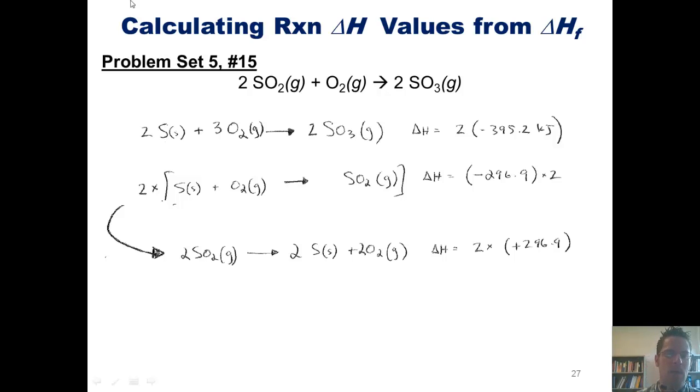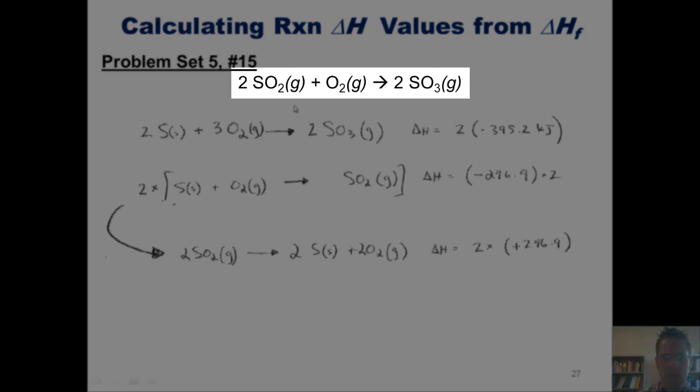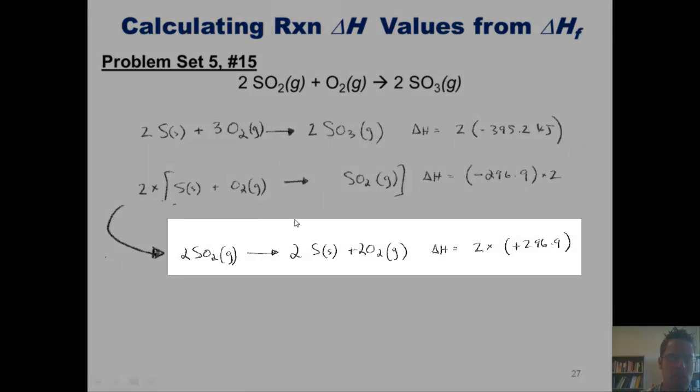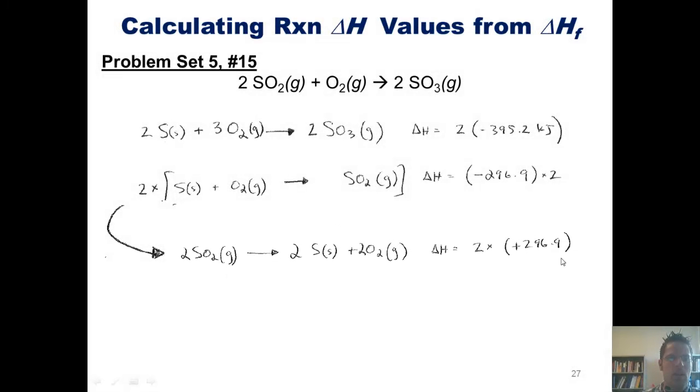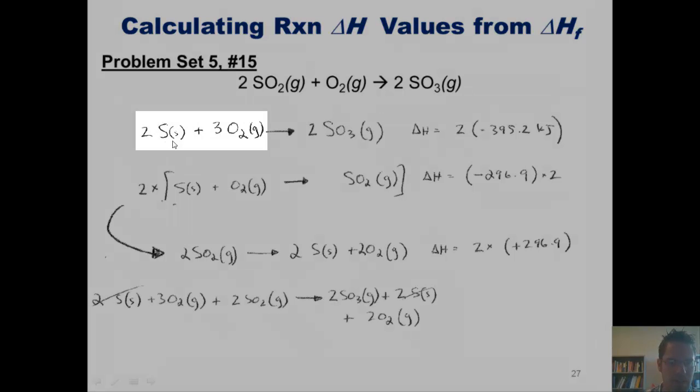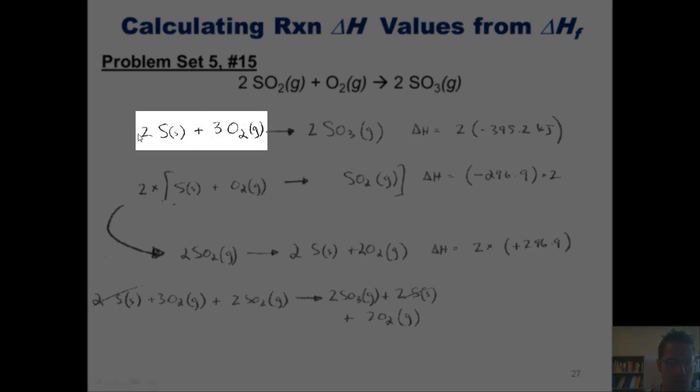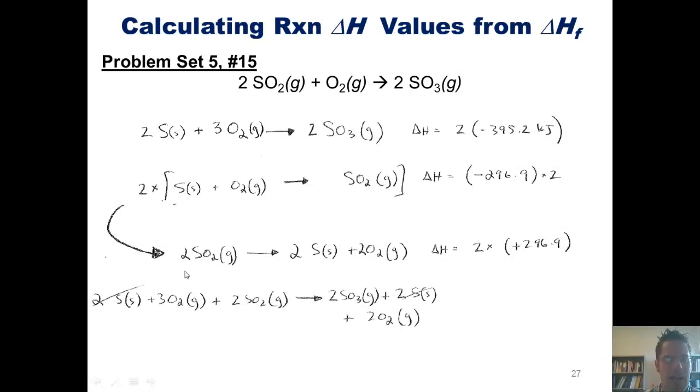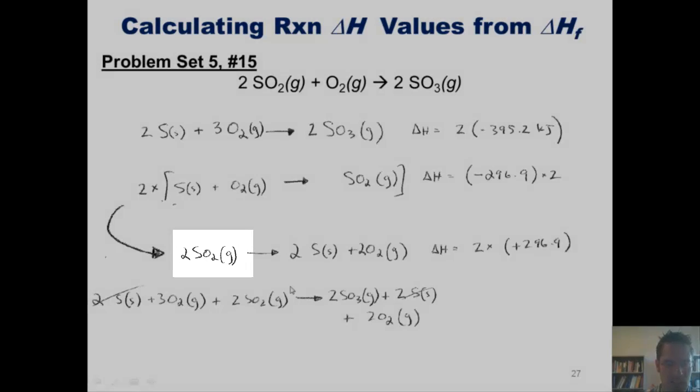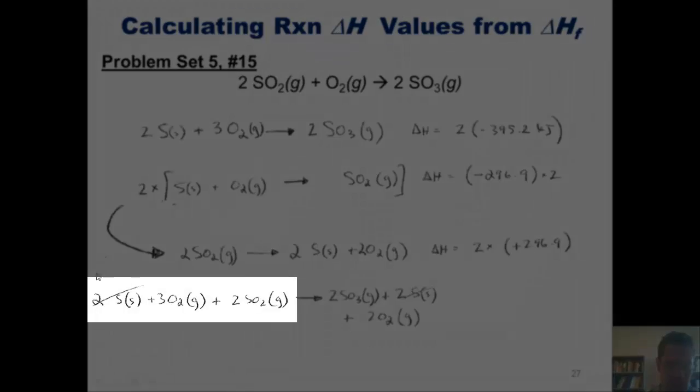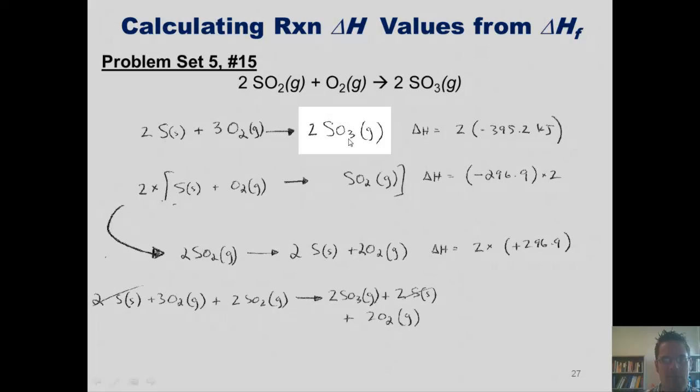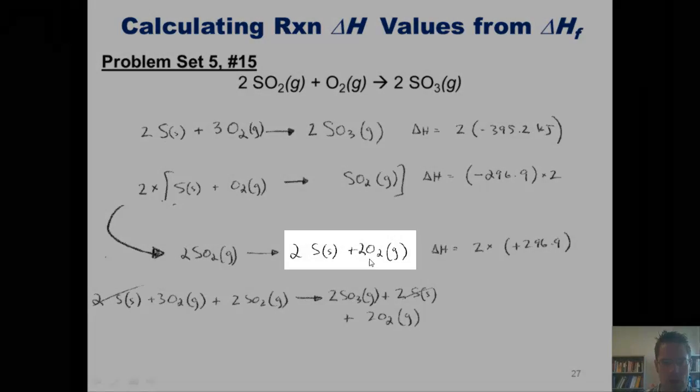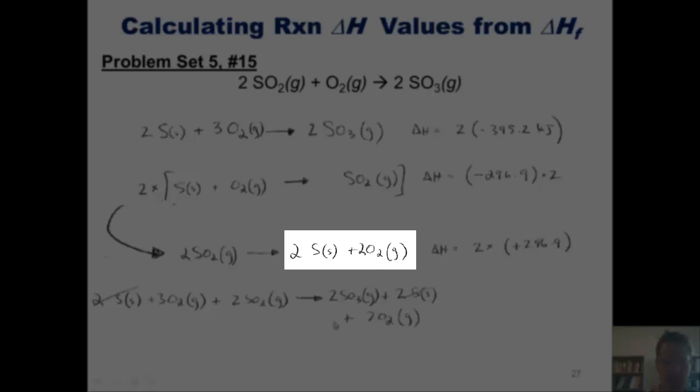What we do now is we add up the two equations that we have, this one shown up here at the top and this one shown here at the bottom. When we do that, you'll see that we get the overall expression shown here. I have two sulfurs and three O2s up here on the left side of the equation adding with two SO2s down here to give me an overall left side of my final equation. I have two SO3s, two Ss, and two O2s on my right side of the equation.